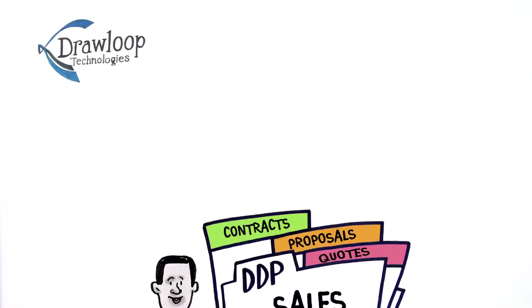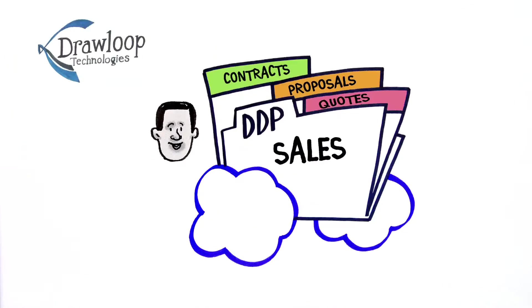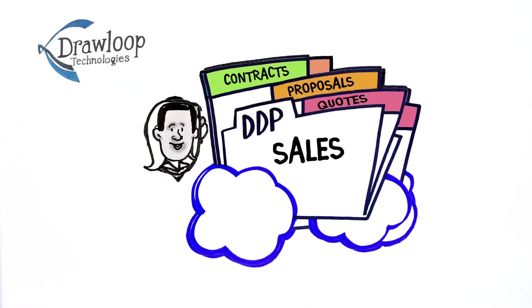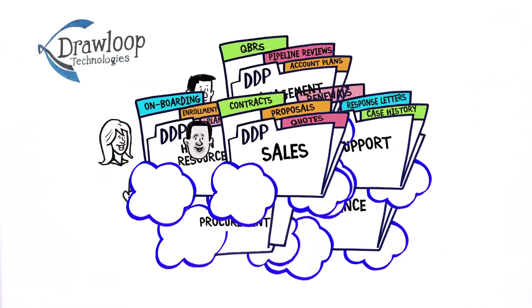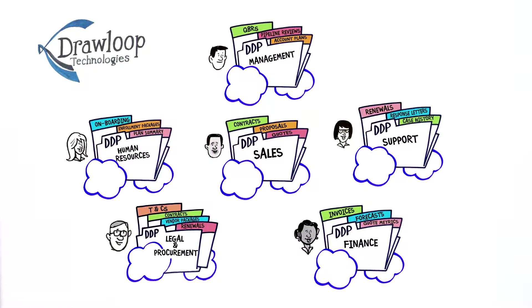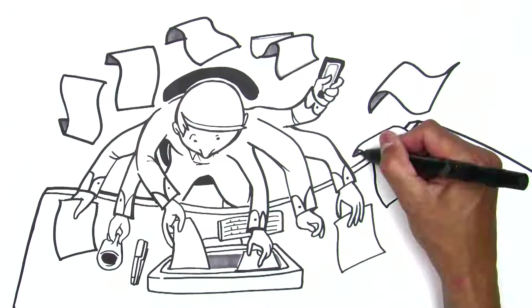If you thought Drawloop was only a sales app for contracts, proposals, and quotes, it's not. Drawloop automates document generation for every type of document, for every department, anywhere in your company. No more time-consuming reinvent-the-wheel quagmires.